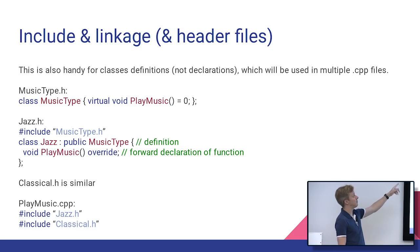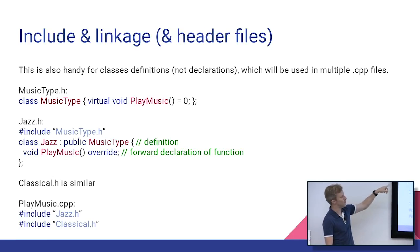So if I have my header file, and I put this class music type in it, this is now a definition of that class. It's not just a declaration that there will be a class. So now I have jazz.h, and it includes musictype.h. And I also have classical.h, and it also includes musictype.h.